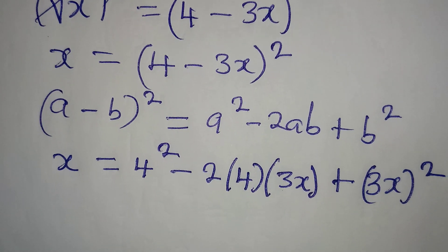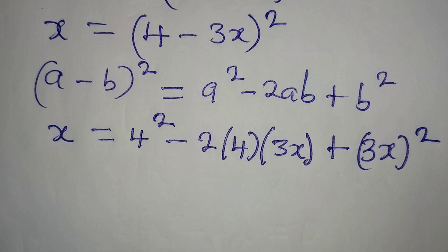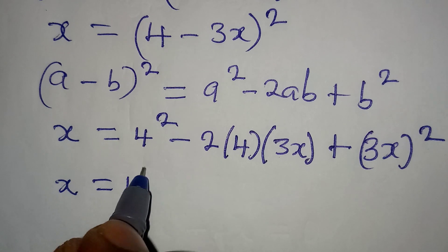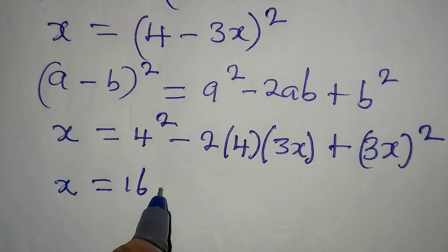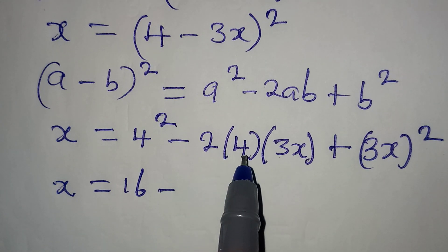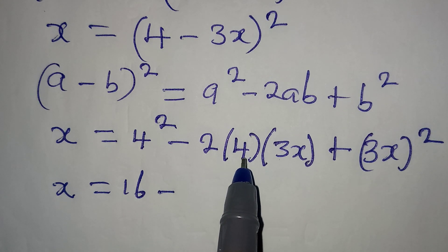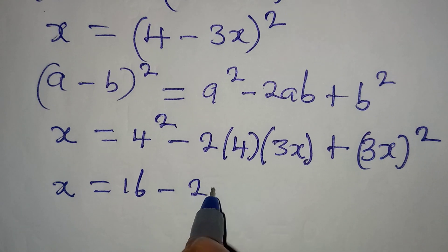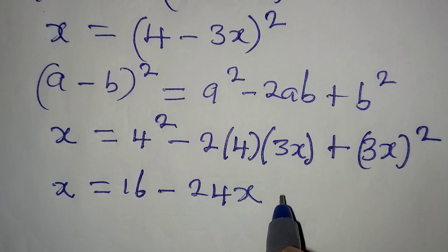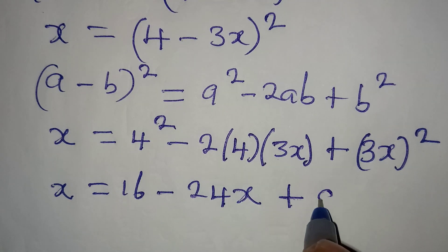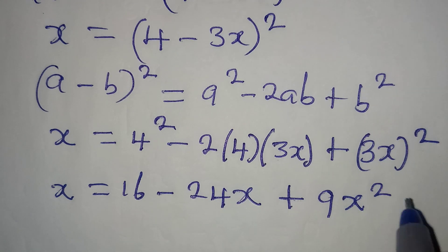Because b is taken to be 3x, from here we have x equal to 16 minus 2 times 4 is 8, and 8 times 3x gives us 24x.